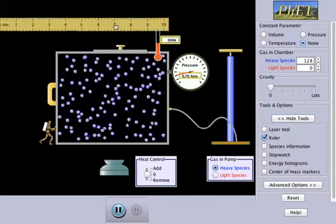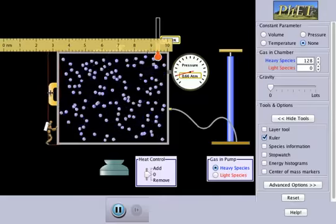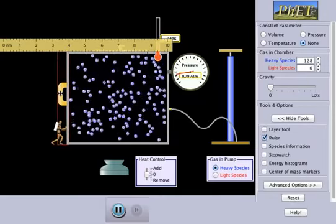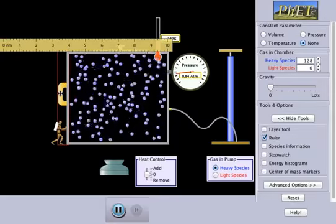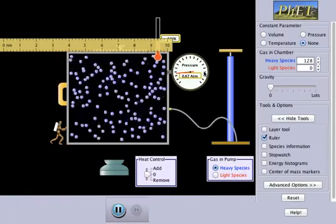We need a ruler because the ruler will allow us to gauge the volume. So what we'll do is just move this to the position 4 and we'll note the pressure.